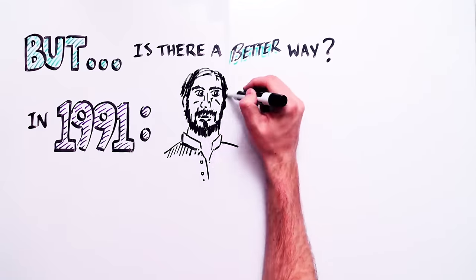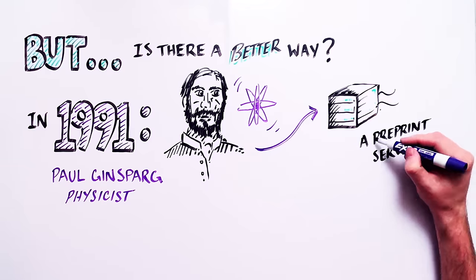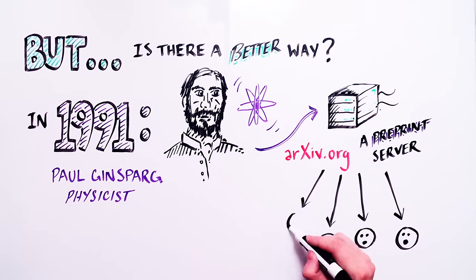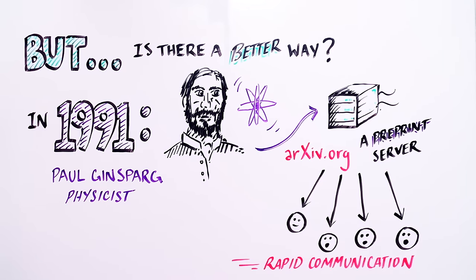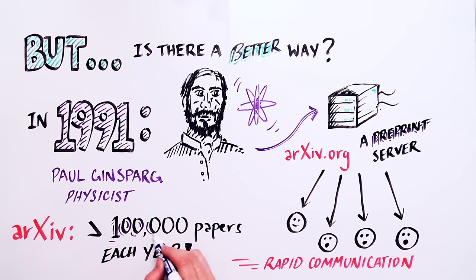In 1991, Paul Ginsberg revolutionized communication among physicists by producing a preprint server called Archive that allows for rapid communication among scientists. Archive now posts more than 100,000 papers each year.